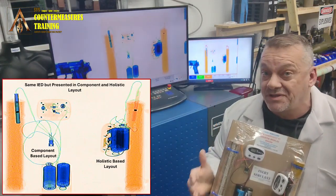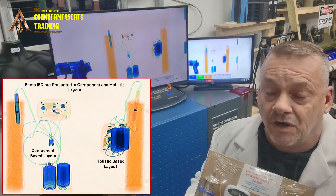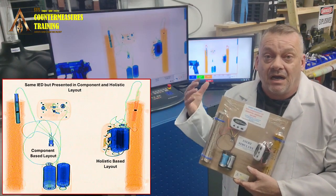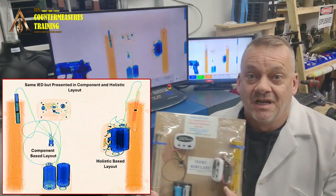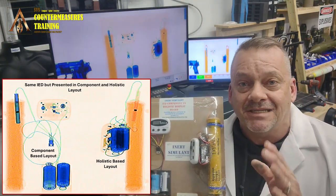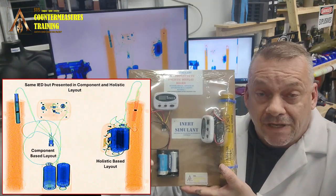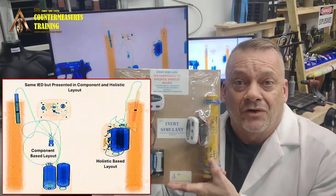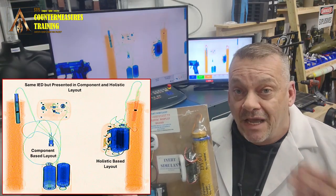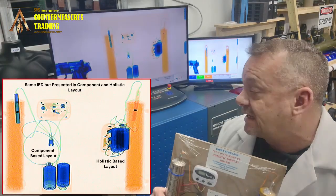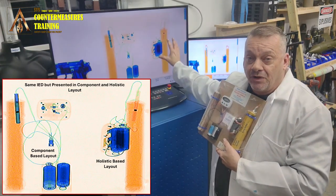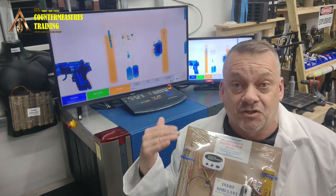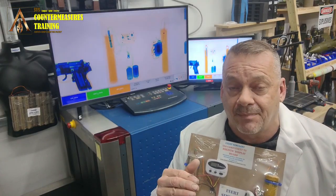Holistic is typically how an IED is going to be presented to you in a real-world scenario — a terrorist constructs it all combined together. All the components are still there but it becomes much more difficult to identify them individually. Component-based has everything laid out separately. You can't always have an IED presented in component-based form, but you have to teach both. Start brand-new students with component-based presentations so they can do individual component identification and visually imprint what each item looks like in an x-ray system.